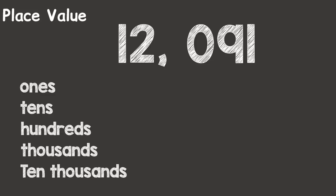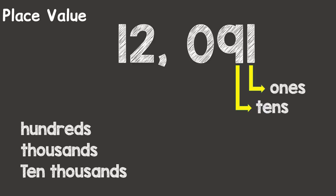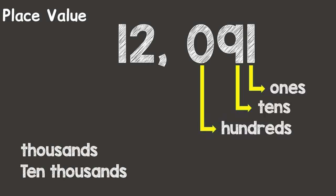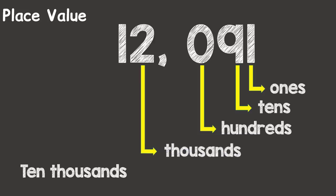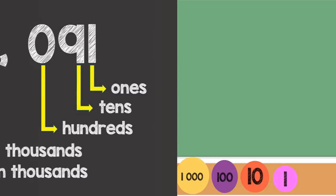Now, let's look at the place value. We can see that the number 1 is in the 1s place. 9 is in the 10s place, that's why we have 9 tens. 0 is in the 100s place, that's why we don't have any hundreds.